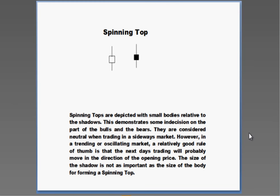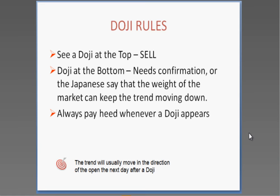The Japanese rice traders provide simple rules for each signal. If you see a doji at the top, it's time to sell. If you see a doji at the bottom, you need to see bullish confirmation — otherwise the weight of the market could continue to push it down. Always take heed when you see a doji because that means there is indecision between the bulls and the bears. And we usually move in the direction of how they open it the next day after a doji.